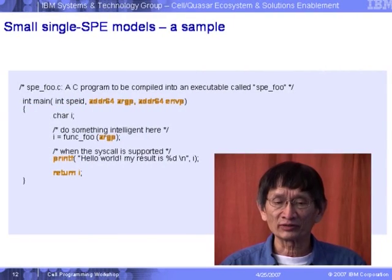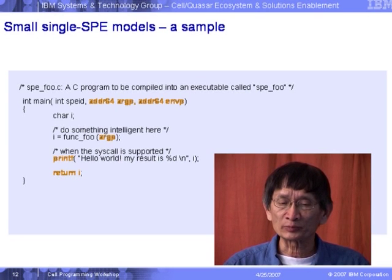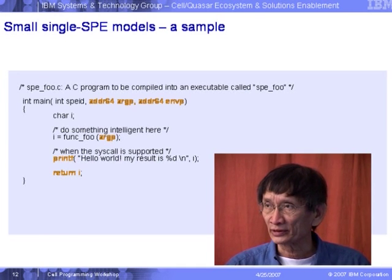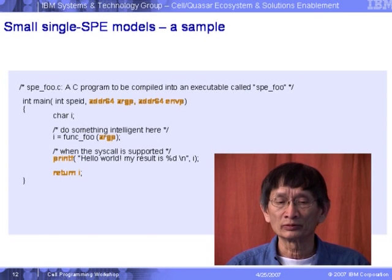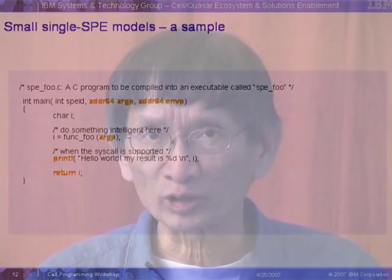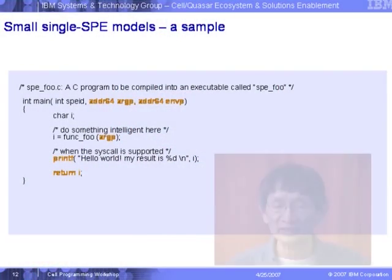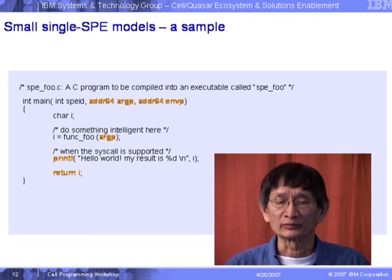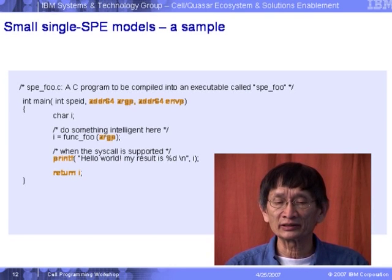A sample program for this environment is called SPE underscore full dot C. We have an integer SPE ID, a 64-bit address argument, and a 64-bit environment pointer. This is the SPE thread. We do something based on the argument passed, then do printf and return 0 or return I. In the PPU program we declare the SPE ID as SPE underscore T, do thread creation, do some wait, and return.